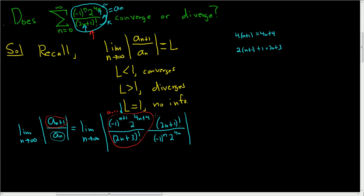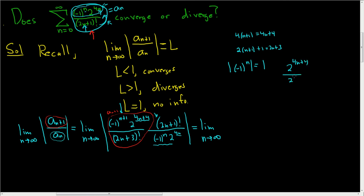So 2n+1 factorial is here, and on the bottom we have that piece. Now, the negative 1's raised to the nth power — well, negative 1 to the nth power is either negative 1 or 1, and in any case you get 1 because the absolute value of negative 1 is 1, so those just go away. We have 2 to the 4n+4 over 2 to the 4n, which is 2 to the 4n times 2 to the 4th over 2 to the 4n.